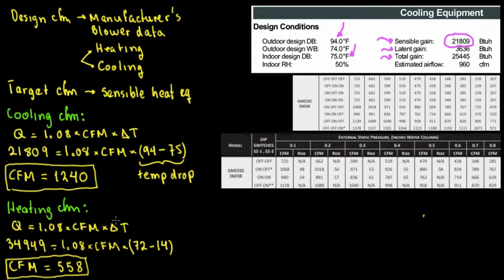As you can see, the cooling CFM is significantly higher. The first step for duct design is to make sure there is enough CFM for all registers and supplies. That's why we take the cooling CFM into account for duct design. If the system can provide this amount of CFM, it will of course also comply with the heating CFM requirement.